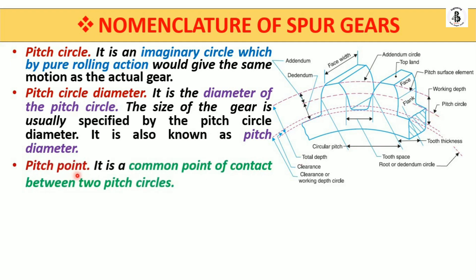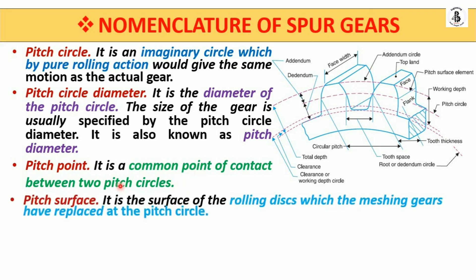The pitch point is the common point of contact between two pitch circles. Because a gear is always used as a meshing pair, one gear meshes with another gear, and they have some contact point — that point is known as the pitch point. The pitch surface is the surface of the rolling discs which the meshing gears have, replaced at the pitch circle — that is the pitch surface element, the point where the actual gear tooth comes in contact with another gear.